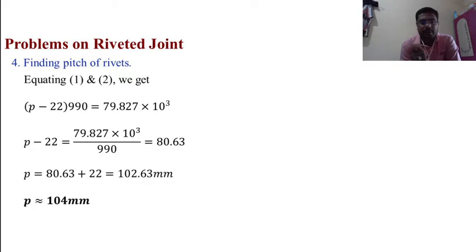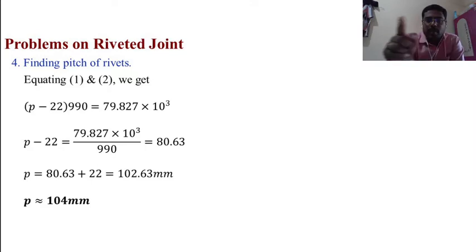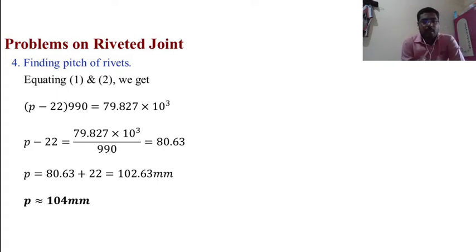Equating equations 1 and 2: (P − 22) × 990 = 79.827 × 10³. Therefore P − 22 = 79.827 × 10³ / 990 = 80.63. So P = 80.63 + 22 = 102.63 mm, rounded to P = 104 mm from the data handbook standard values.